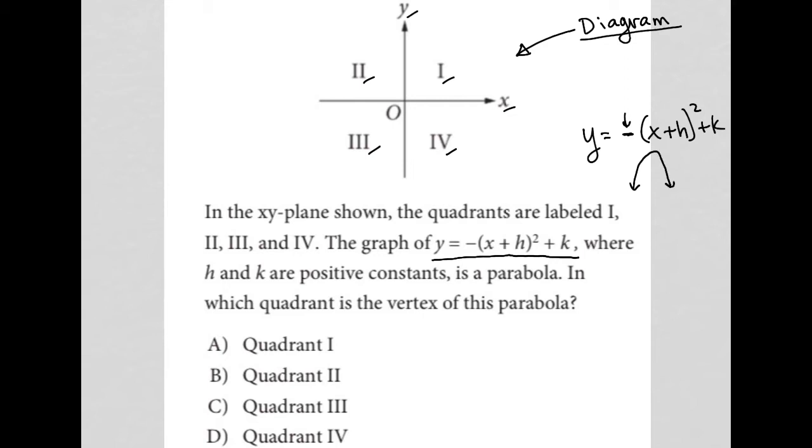And I also know that the vertex of this parabola should be the ordered pair (-h, k).